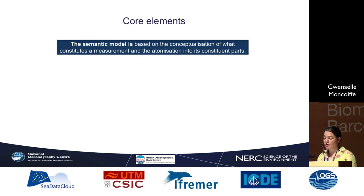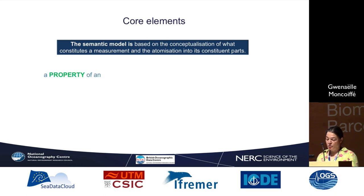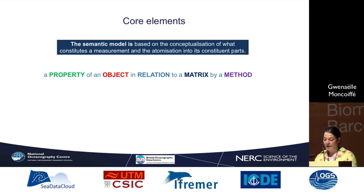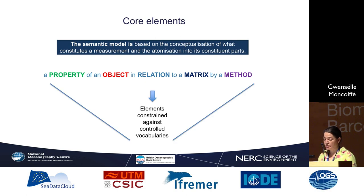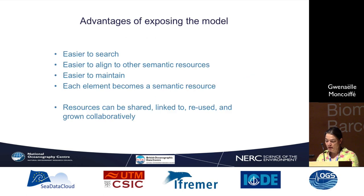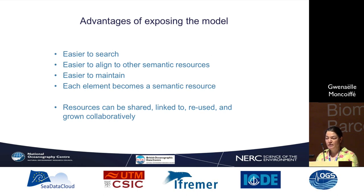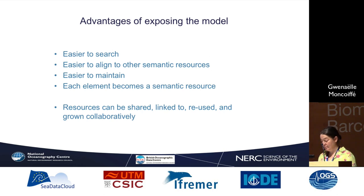The semantic model is based on the conceptualization of what constitutes a measurement and the atomization into its constituent parts. It is the property of an object in relation to a matrix by a method — those are just the core elements, and all those elements need to be constrained against controlled vocabularies. The advantage of exposing that model is that it's easier to search, easier to align to other semantic resources, easier to maintain, and each element becomes itself a semantic resource in its own right. Those resources can then be shared, linked to, reused, and grown collaboratively.